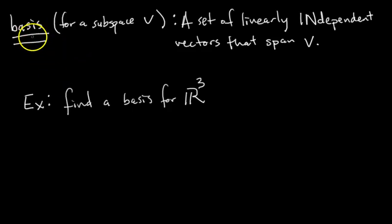Whenever you talk about a basis, you're always going to talk about it in the context of a subspace. You always want to say a basis for a subspace. For example, a basis for a subspace called V is a set of linearly independent vectors that span V.